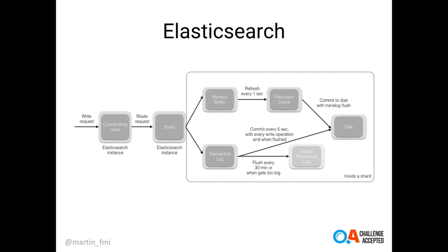When we execute a write request to write data to Elasticsearch, the data is first sent to a coordinating node in the Elasticsearch cluster. That node coordinates the document being written to a particular shard or node in the cluster. From there, the data is not written directly to disk in Lucene segments. Instead, Elasticsearch provides two main areas in memory called the memory buffer and transaction log to store the data. By default, the memory buffer is flushed every second to disk, and the transaction log flushes every 30 minutes or when it gets too big.